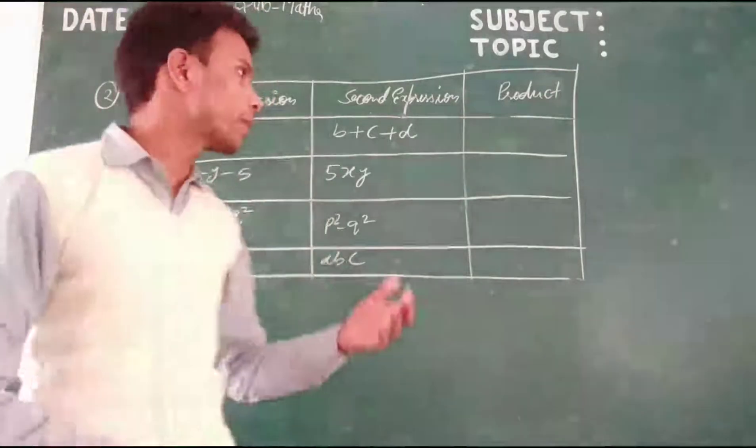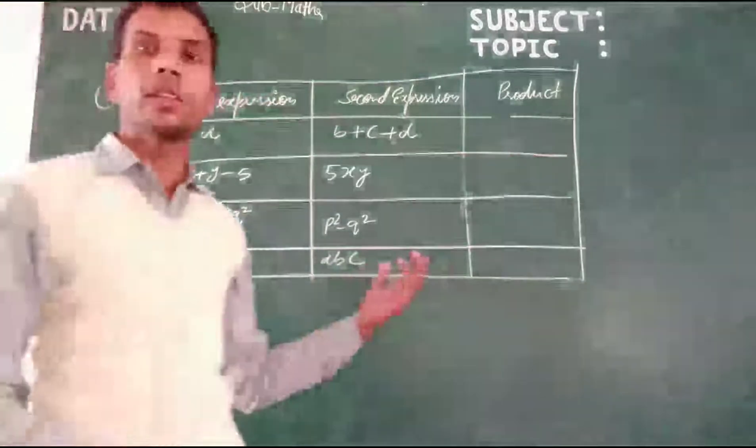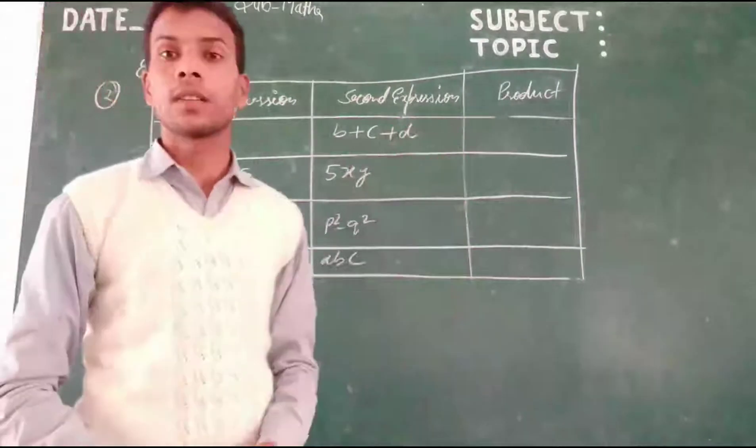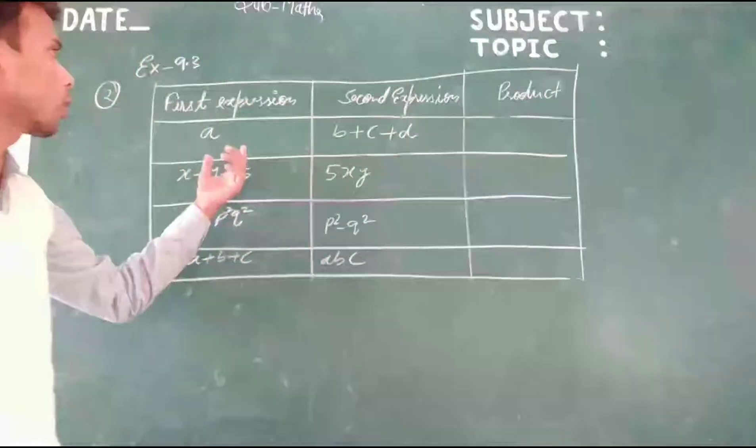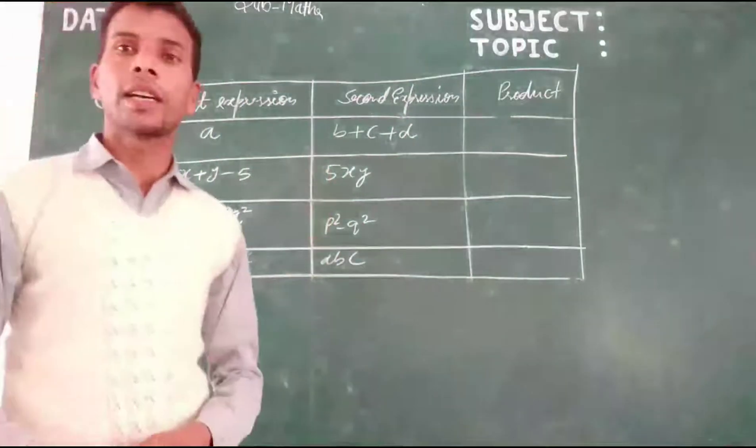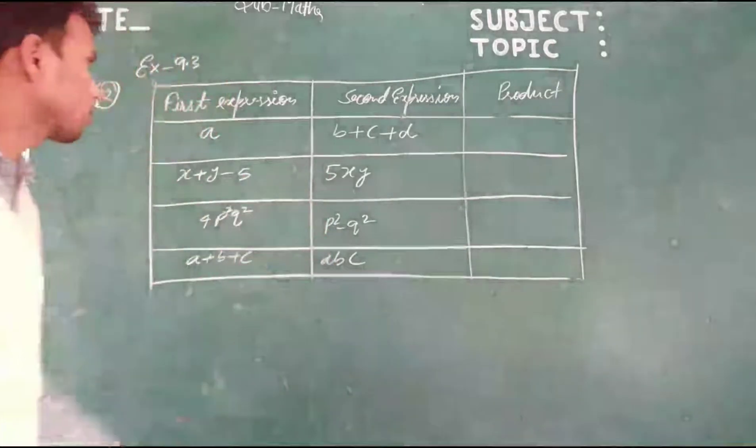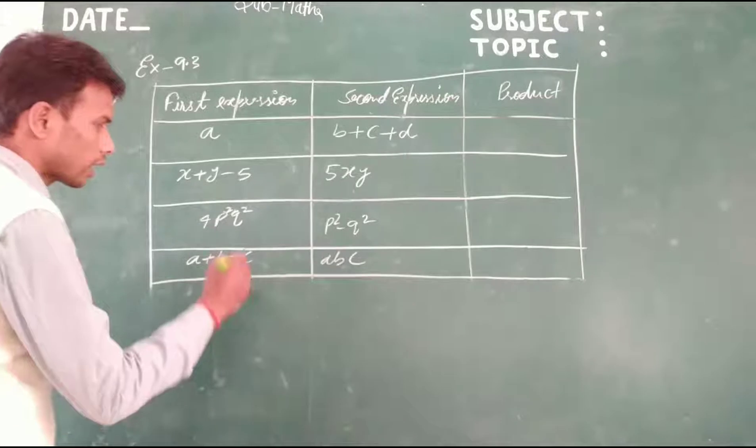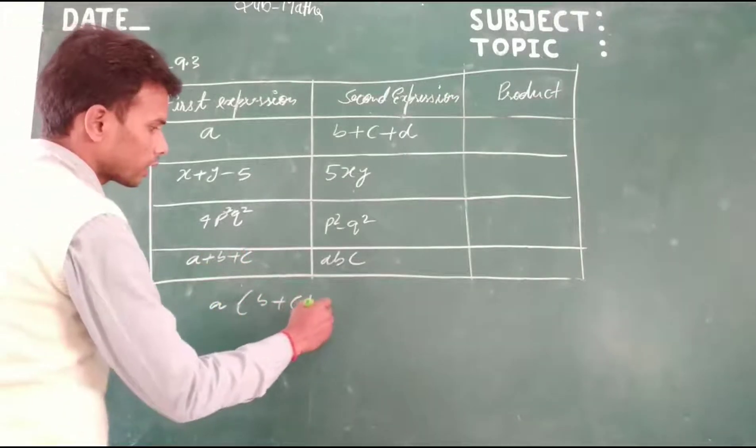In this question, we need to complete the table. Here's the given table with first expression, second expression, and product columns. We have to find out the product of first expression times second expression. In question number 1, first expression is A, second is B plus C plus D.